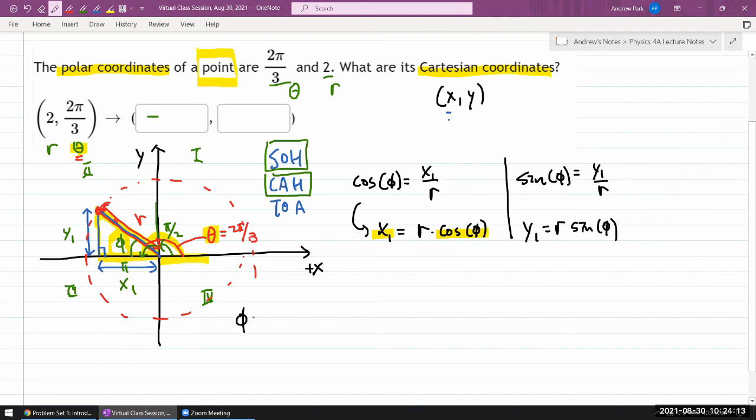I'm using radians, so let me stick with radians. φ is π minus 2π over 3, or doing that in my head, π over 3.